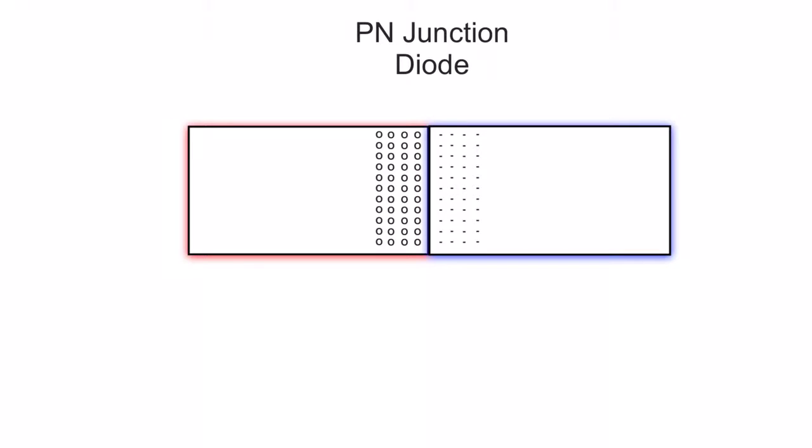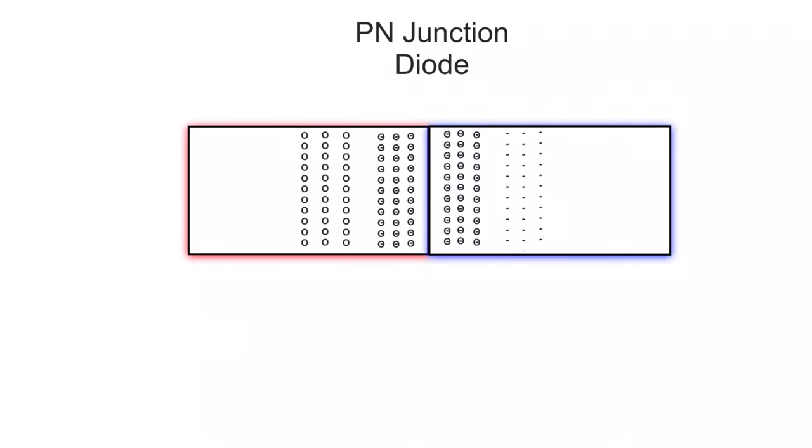Now, what happens is the electrons in the n-type, so all these guys right here, they see the holes in the p-type, and the p-type guys see the electrons over here. Now, everybody's mission in life is electrons like to fill holes, and holes like to be filled by electrons, so they kind of meet up in this middle area here.